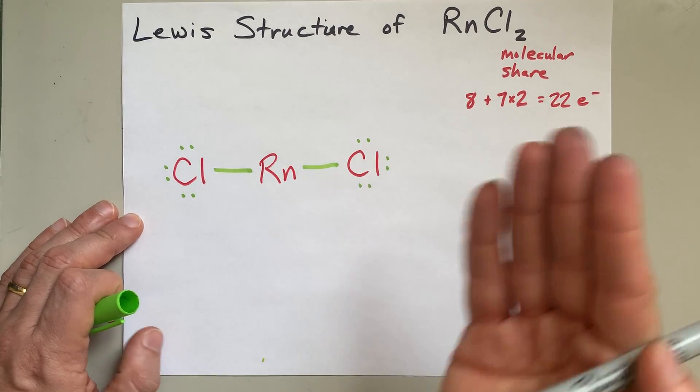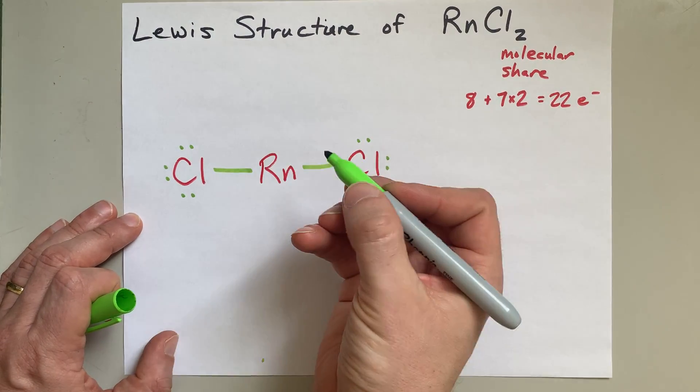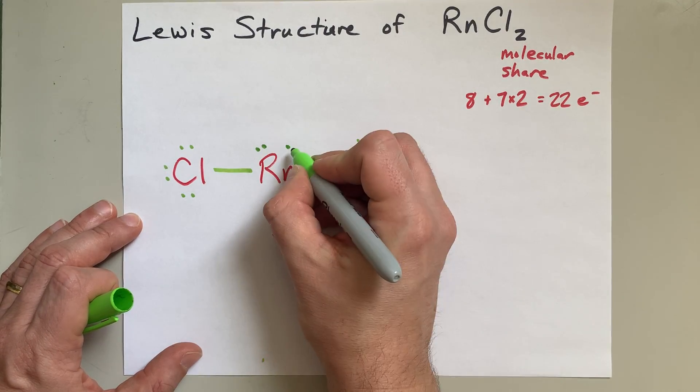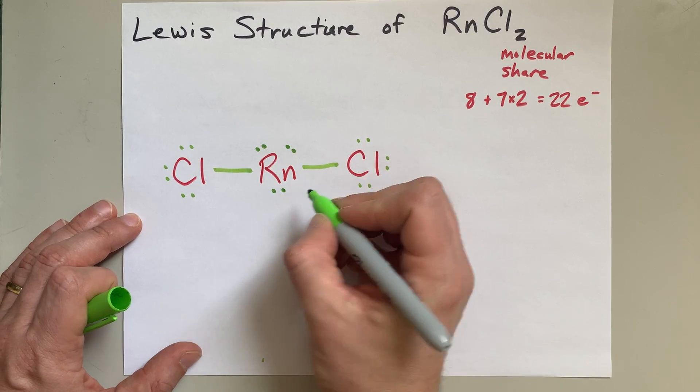What do you do? The answer is you dump them all on the central atom in pairs, but they are lone pairs. That's 17, 18, 19, 20, and 21, 22.